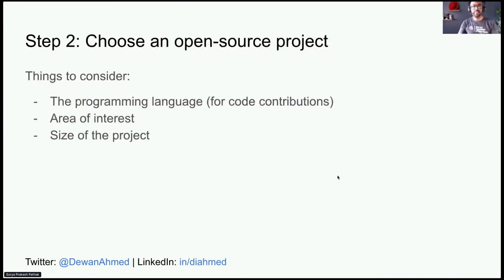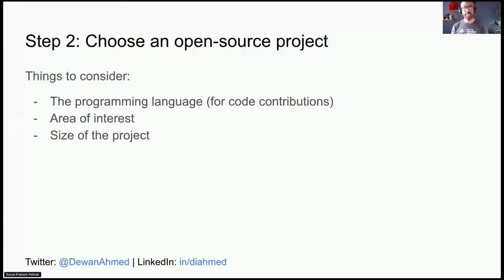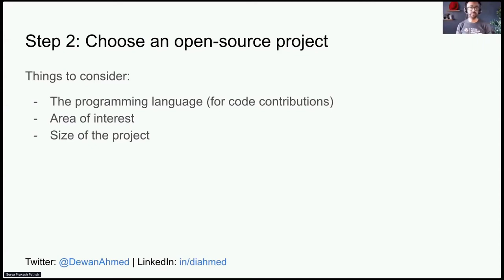The second step is choosing an open source project. There are three things to consider. First, the programming language — this is especially true for code contributors. If you have a preference, you can filter open source projects by that. And if you don't, you can start with anything and switch to a different project if it's not something you'd like to keep learning.